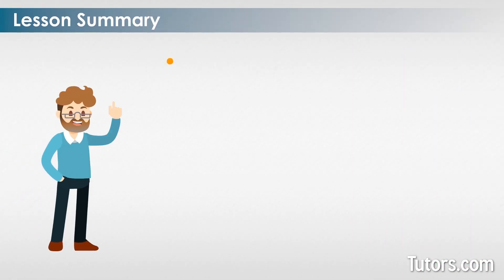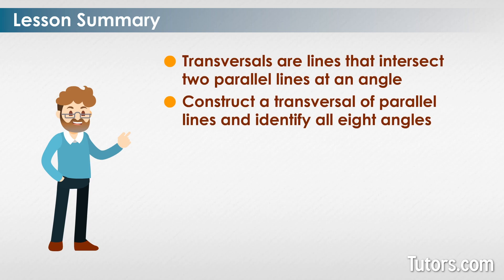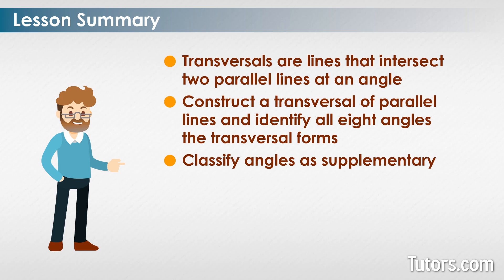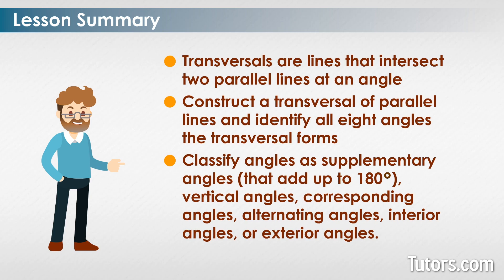Lesson summary. Transversals are lines that intersect two parallel lines at an angle. You can also construct a transversal of parallel lines and identify all eight angles the transversal forms. You can classify angles as supplementary angles that add up to 180 degrees, vertical angles, corresponding angles, alternating angles, interior angles, or exterior angles.